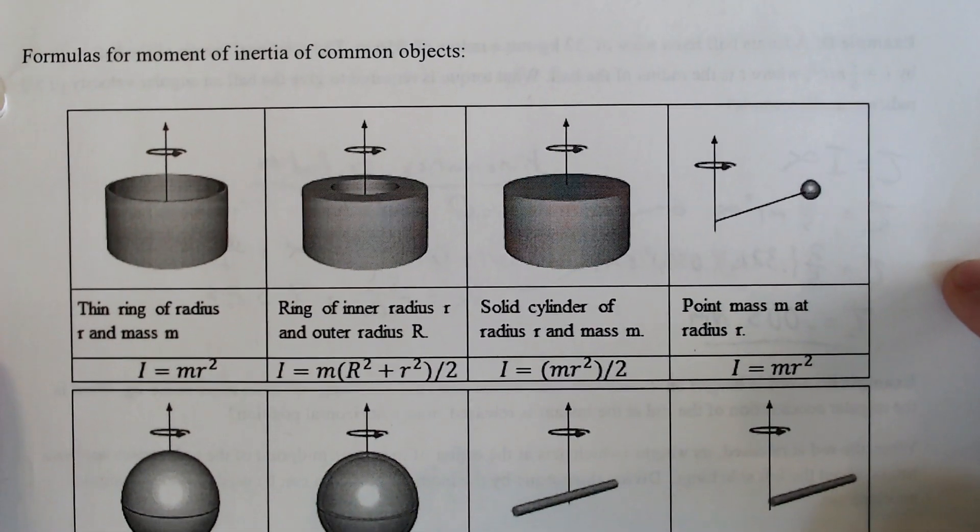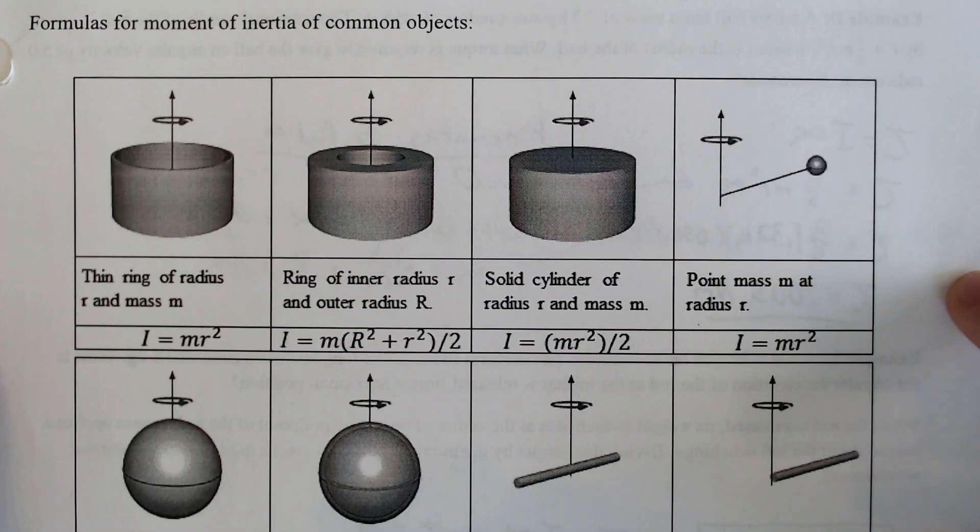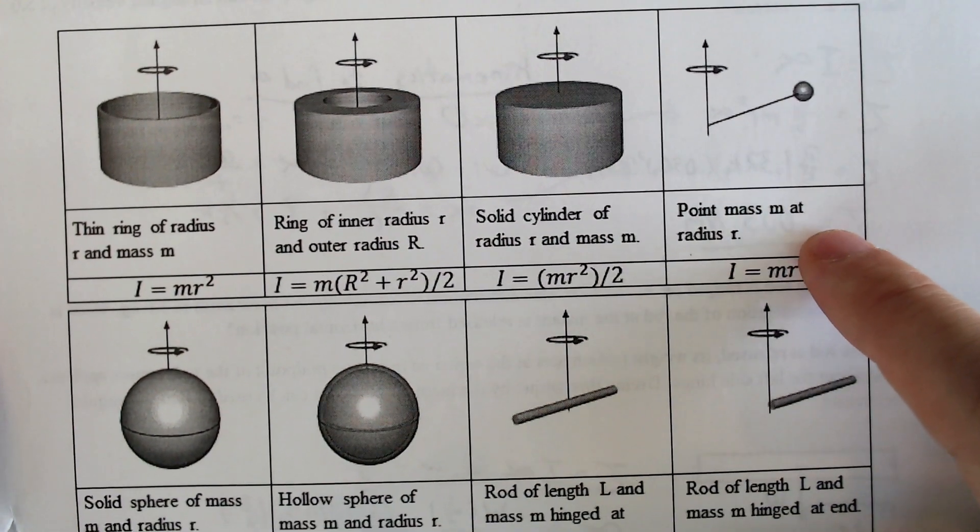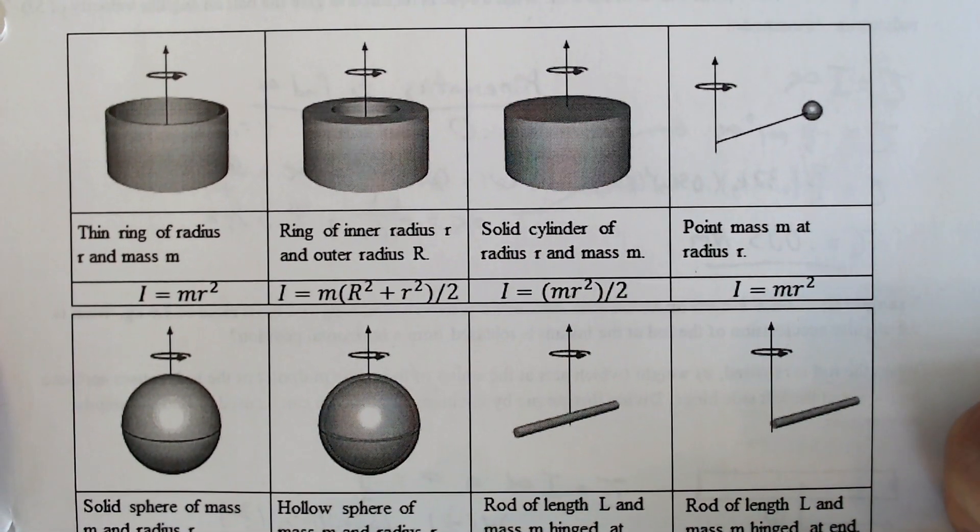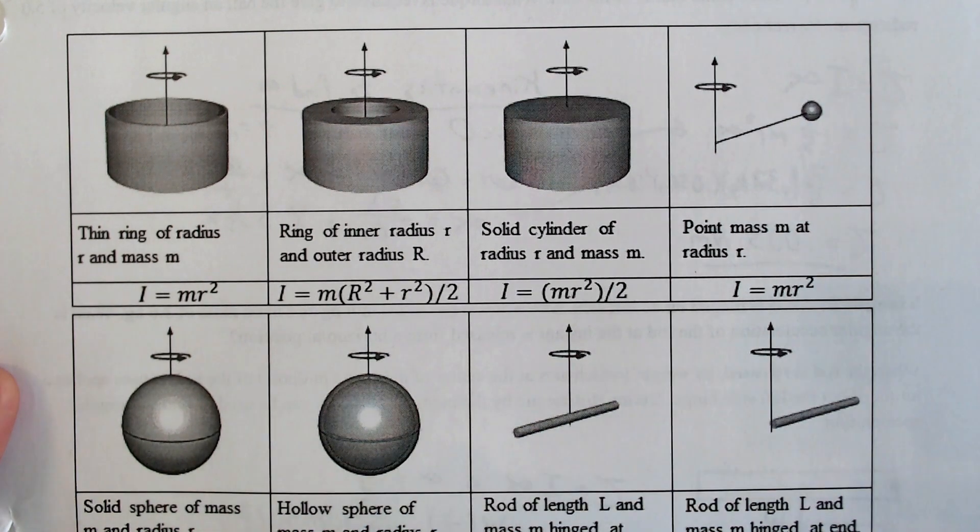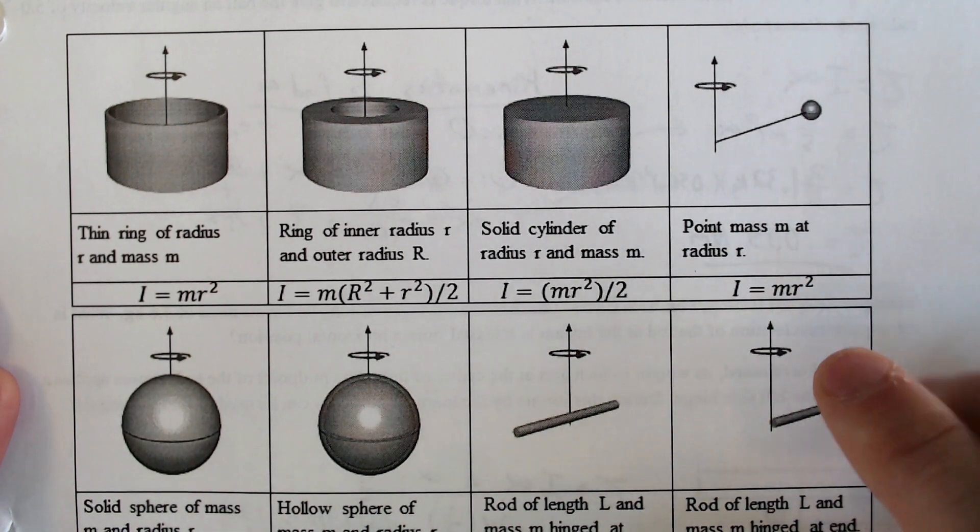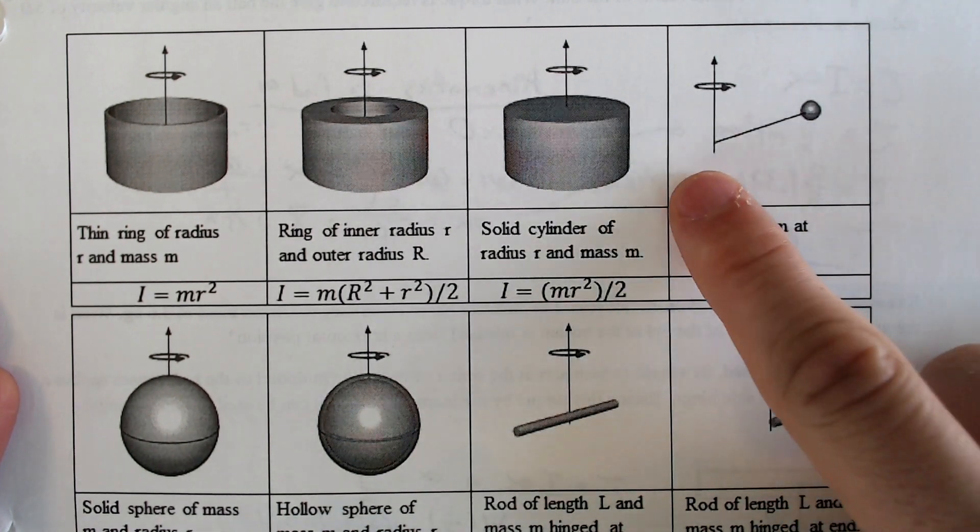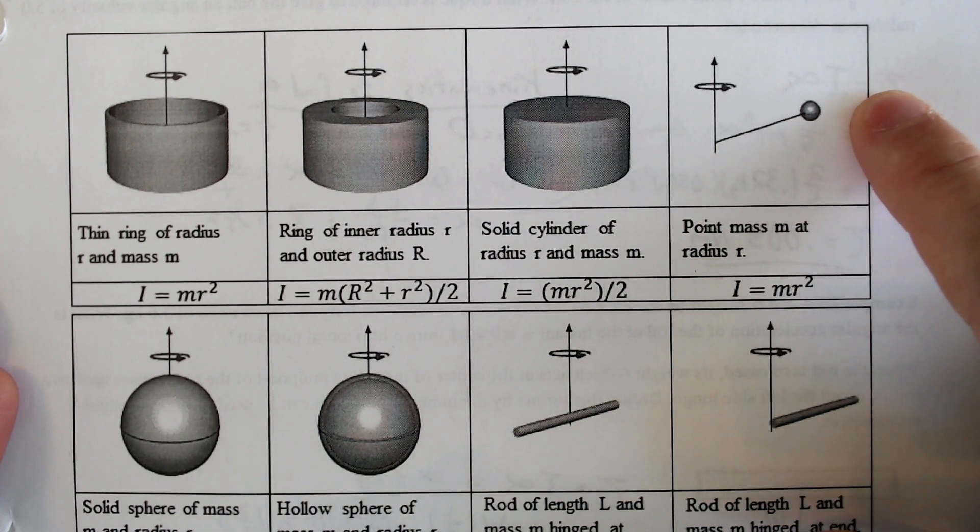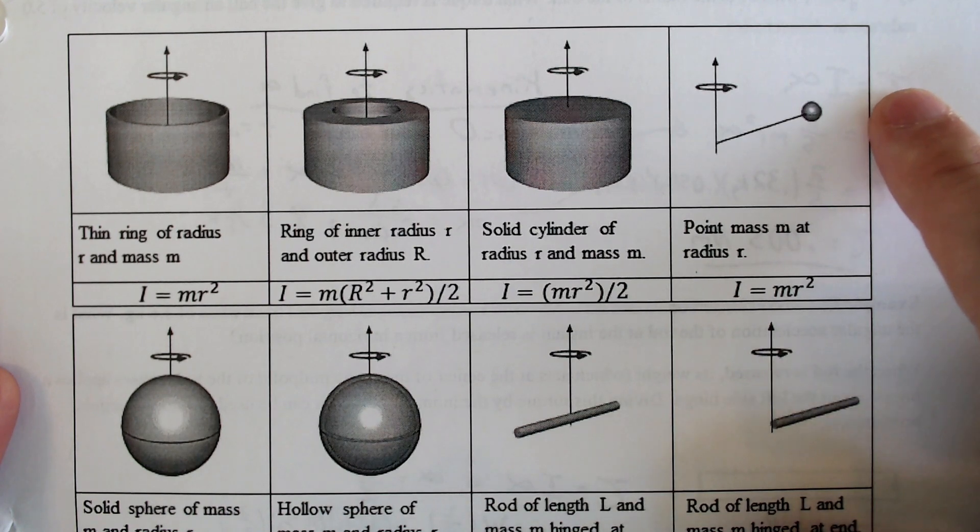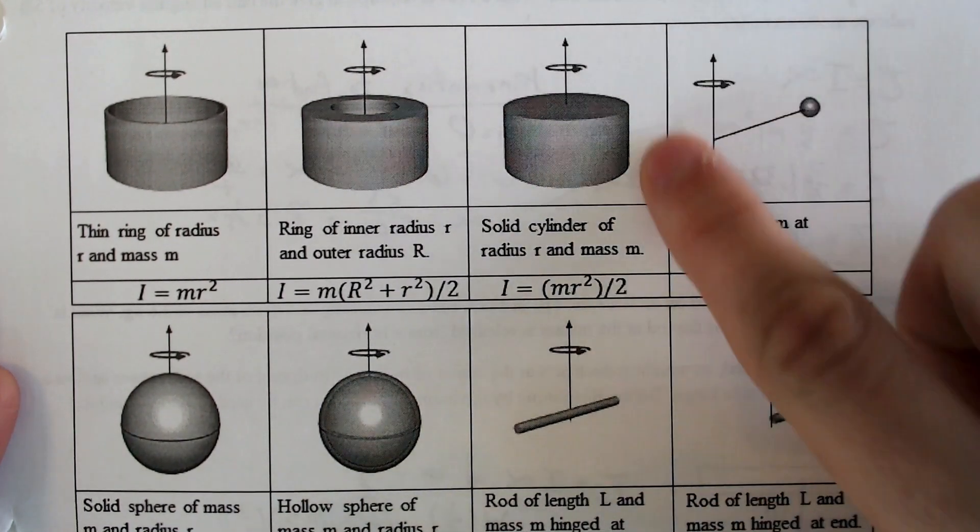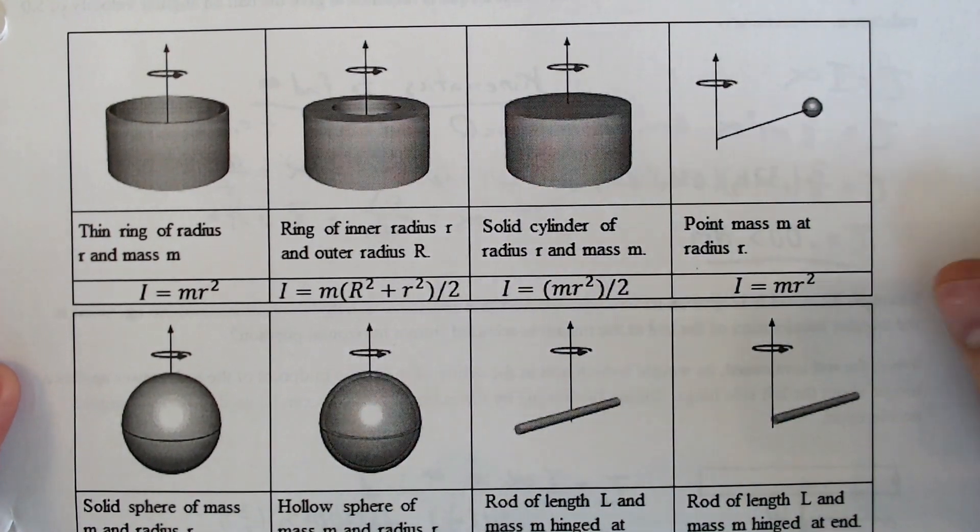With that in mind, there are several different common formulas for a moment of inertia. I'm going to focus on the few that I think are going to be the most common examples with the AP exam. I'm going to draw attention to this one: a massless string, so to speak, if you had a ball at the end of it, the moment of inertia, the I, would just equal MR squared, which kind of makes sense because it's spinning in a circle.